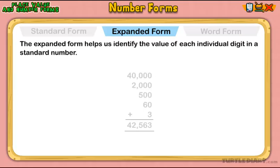I can write the numbers vertically and add them to get the standard form of the number. This is another way to show the place value of the digit.